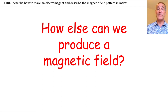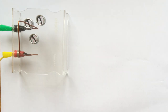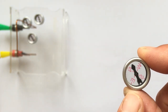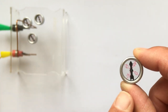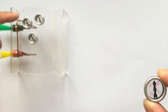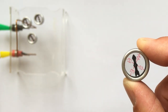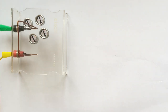We can use current to produce a magnetic field. In this demonstration, compasses are arranged around a wire — compasses show the direction the field is travelling. With no current flowing through the wire, all compasses point north to south. Without a magnetic field due to electricity, the compasses will always point north to south.